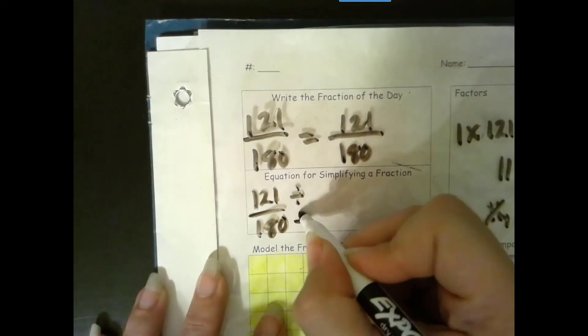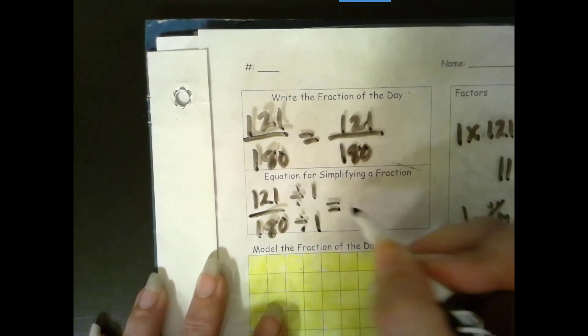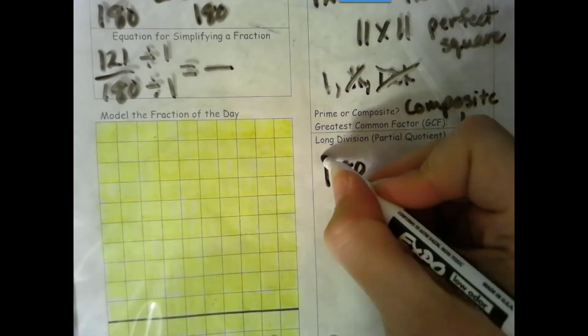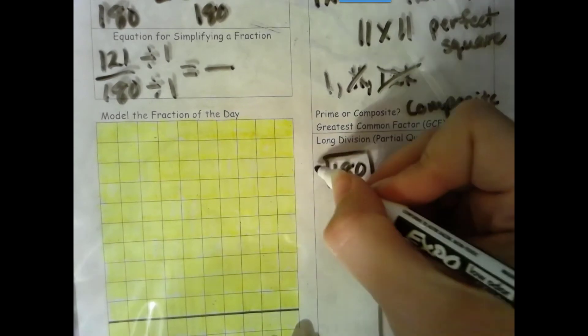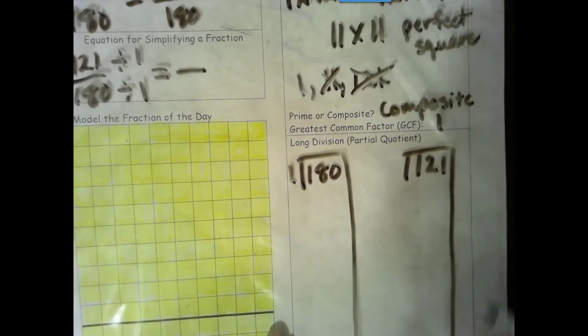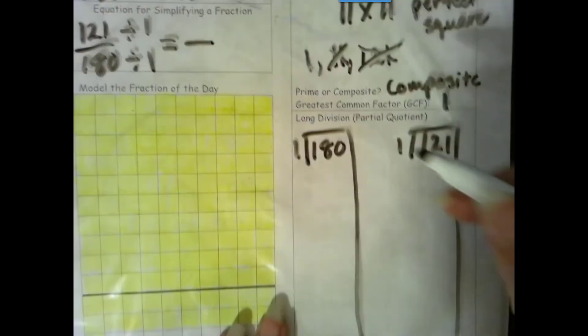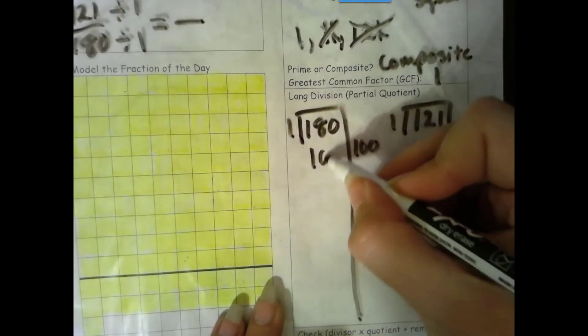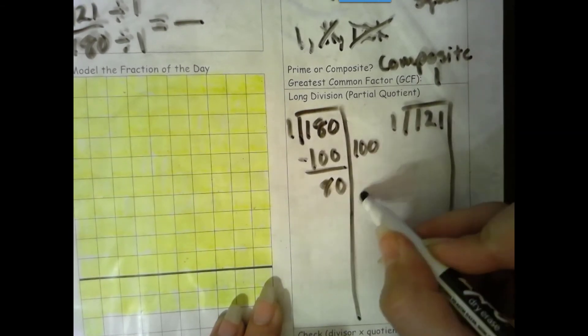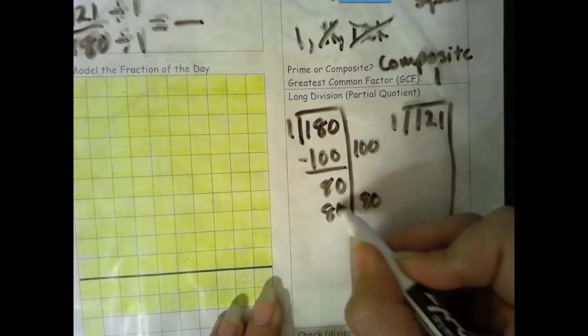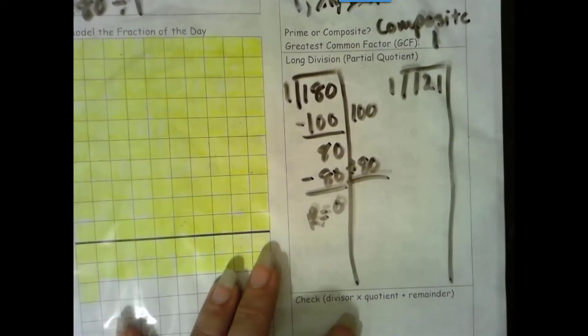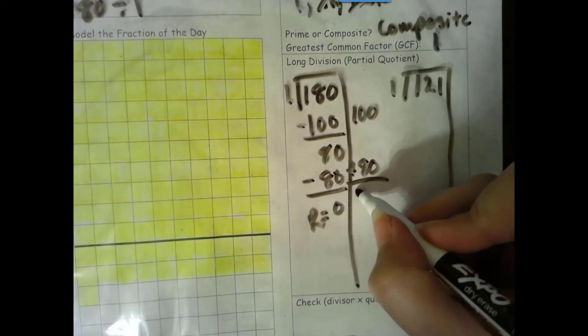So we've done our division with our model. Let's go ahead and use our algorithm to prove it in a different way. So we're dividing 180 into groups of 1 and 121 into groups of 1. 100 times 1 is 100. Number is the same. Zero is the game. More on top. No need to stop. 80 times 1 is 80. Number is the same. Zero is the game. Add our partial quotients together. 100 plus 80 is 180.